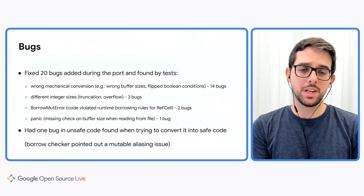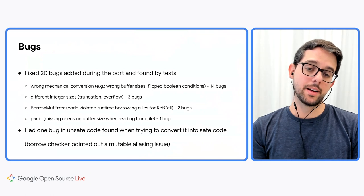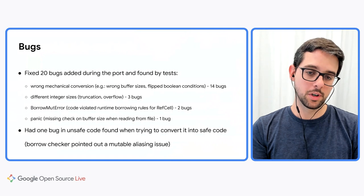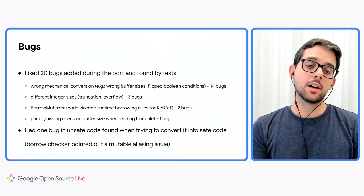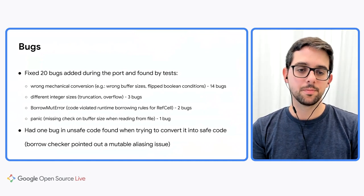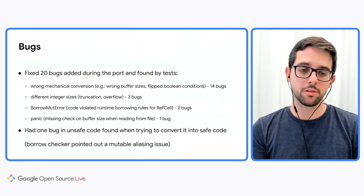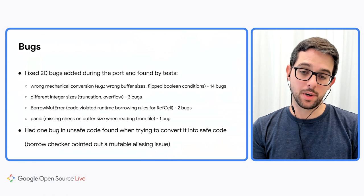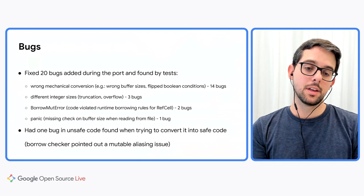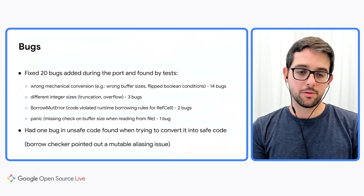From the 20 bugs introduced during the port that were found by end-to-end tests and fuzzers, 14 were caused by wrong mechanical conversions — for instance, wrong buffer sizes, flipped boolean conditions, or forgotten else clauses. Three bugs were caused by using different integer sizes, so truncation and overflow. Two bugs were borrow-mut errors, meaning the code violated runtime borrowing rules for RefCell. One bug was a panic found by a fuzzer because the code was missing a check on the buffer size when reading from a file. And I also fixed one bug in unsafe code written during the first phase.